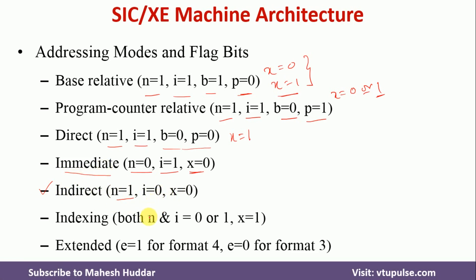Either N and I is 0 or 1, and if X equals 1, it is called indexed addressing mode. The value of E will determine whether it is format 3 or format 4 — if E is 0, it is format 3; if E is 1, it is format 4.